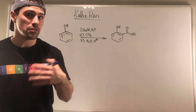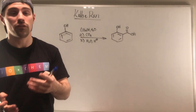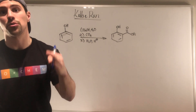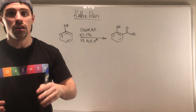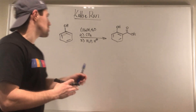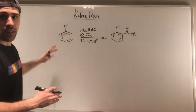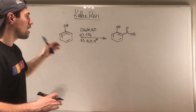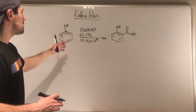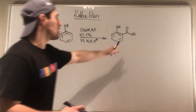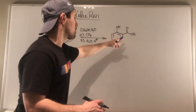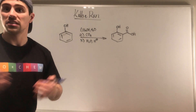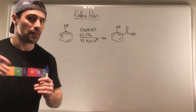All that craziness is going to pay off because this video on the Kolbe reaction is going to be super duper short. All the Kolbe reaction does is you take phenol with some base, some carbon dioxide, and then acidic workup — you basically just add a carboxylic acid ortho to your hydroxy group in your phenol. Let's take a look at how that happens.